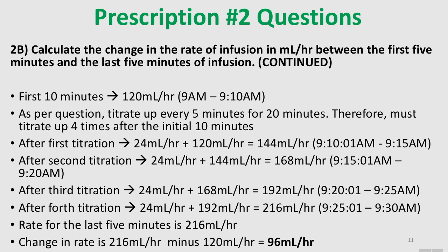After the first titration: 120 + 24 = 144 mL per hour. After the second: 168 mL per hour. After the third: 192 mL per hour. After the fourth titration — the last 5 minutes — the rate is 216 mL per hour. The first 5 minutes rate was 120 mL per hour, and the last 5 minutes rate is 216 mL per hour. The change is 216 minus 120 = 96 mL per hour.